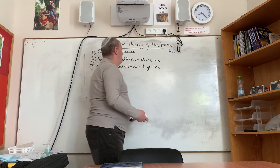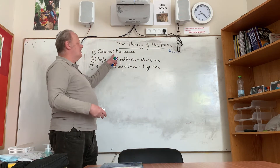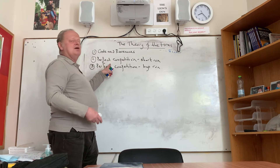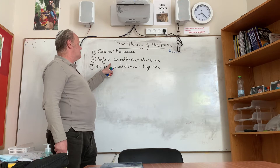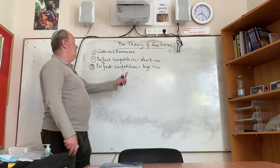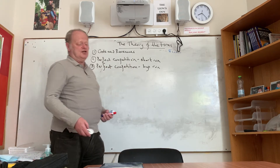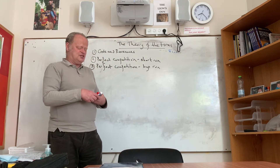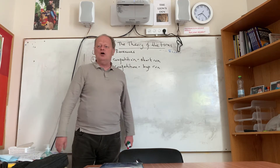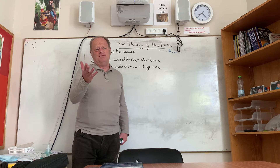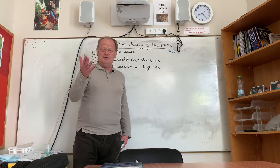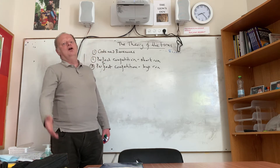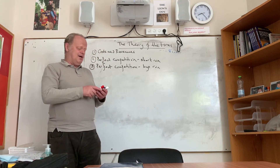We're going to be looking at three aspects. We'll first look at costs and revenues, which every business has to have. Then we're going to look at one model of business called perfect competition in the short run and perfect competition in the long run. Costs is how much you actually spend to keep the business going — your land, labour, capital, your factors of production. Revenues is the amount coming in.